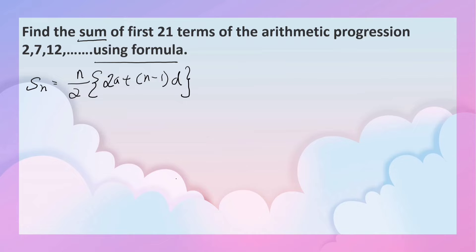Here n is 21. A is 2. The first term is a, that is 2. So, d is common difference. d is 7 minus 2, that is 5. 12 minus 7, that is also 5. So, common difference is 5.